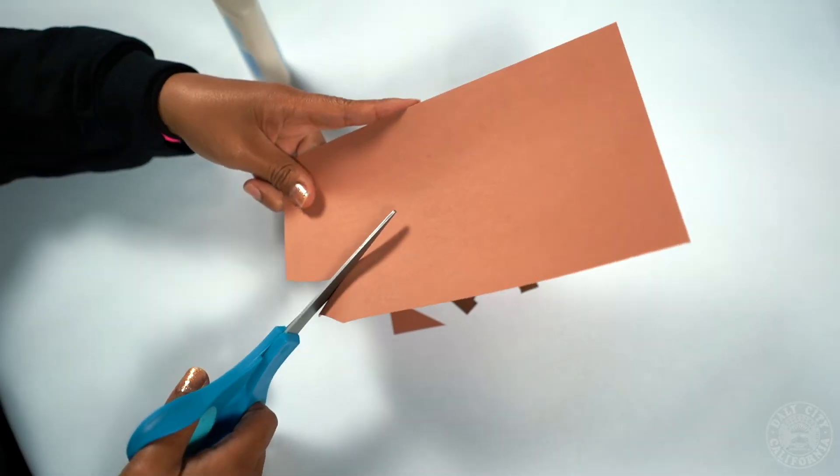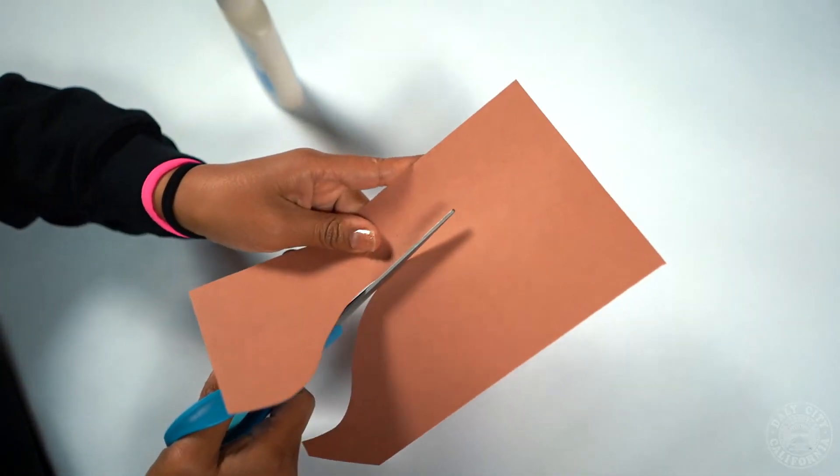Your first step is to freehand cut the brown cardstock into a hedgehog shaped body.